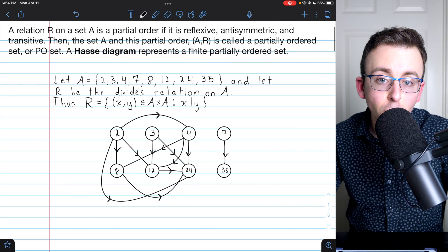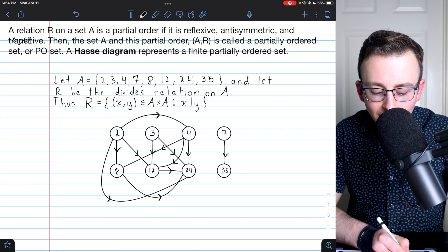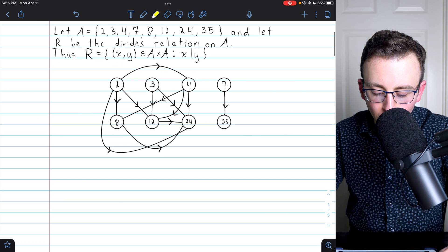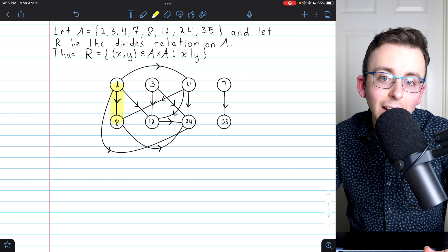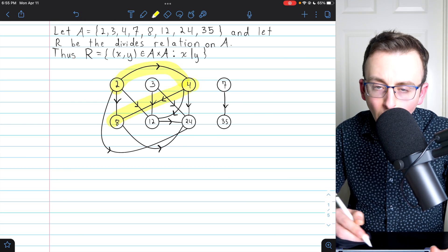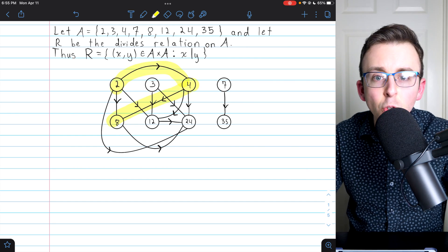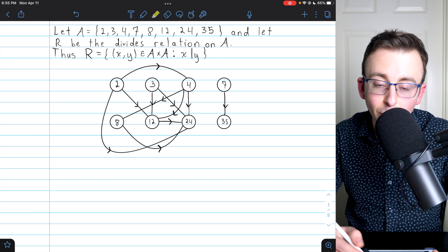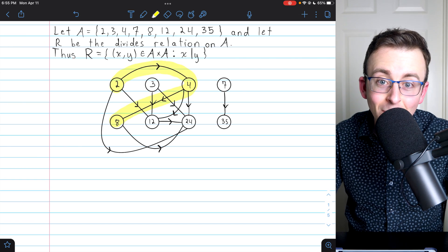Is there any other property of partial orders that we could use to cut down on the clutter in our diagram? What about transitivity? Let's come back to our diagram. I see, for example, that I have this arrow going from 2 to 8 because 2 divides 8. But I know that by transitivity, right, because 2 divides 4, and 4 divides 8. And since this is representing a partial order, which is transitive, I know that 2 has to divide 8. I don't really need that arrow going from 2 to 8 because I know I'm dealing with a transitive relation. So if I can follow the arrows to get from 2 to 8, then 2 divides 8. End of story.